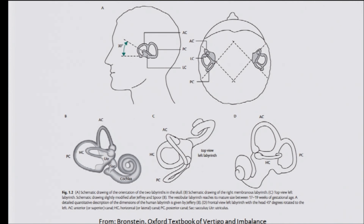The three canal pairs: LARP, RALP, and horizontal. The three rotational planes: yaw, pitch, and roll. For translations: the movement corresponding to the saccule going up and down is called bob; the forward-backward translation is called surge; and the side-to-side translation is called heave.